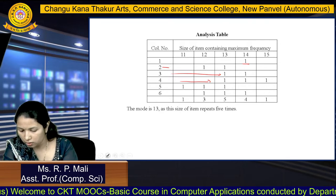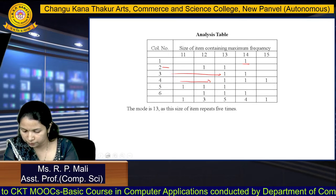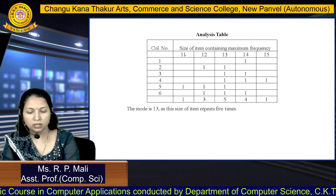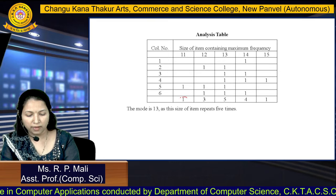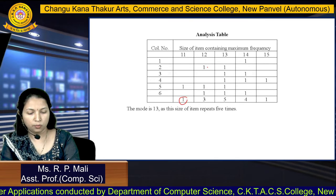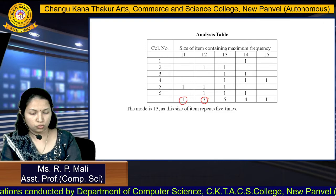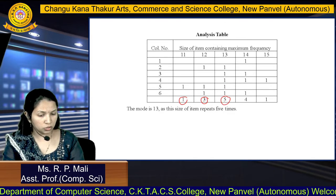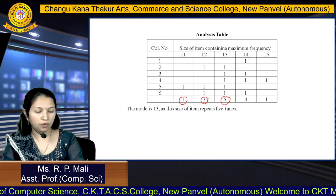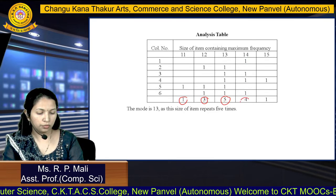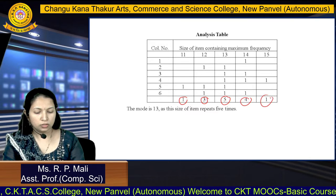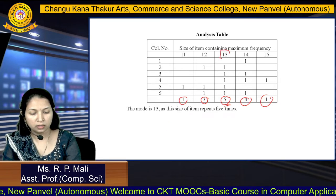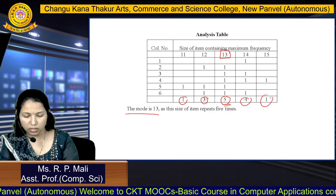After putting all the 1's, we add them up. Size 11 has only 1 one. Size 12 has 3 ones. Size 13 has 5 ones. Size 14 has 4 ones. Size 15 has only 1. The highest number is 5, so your mode will be 13, as size 13 appears 5 times. The mode is 13.